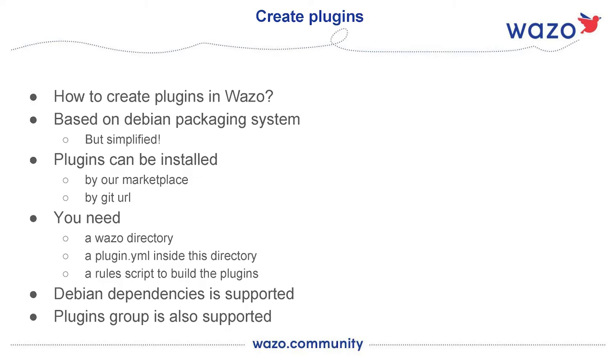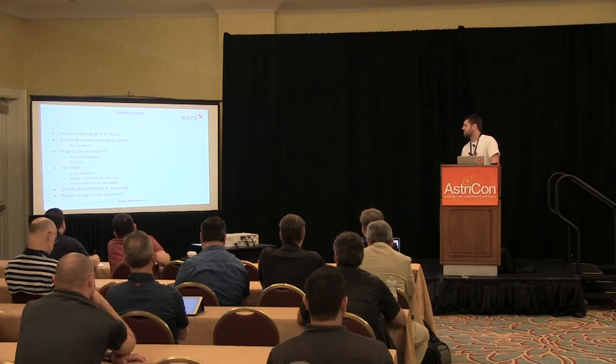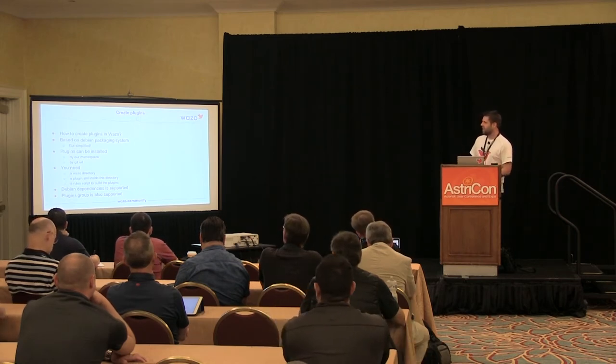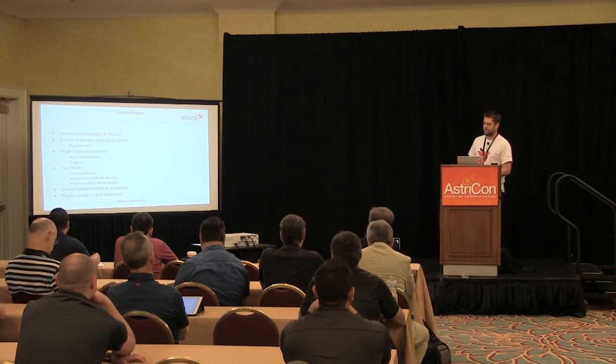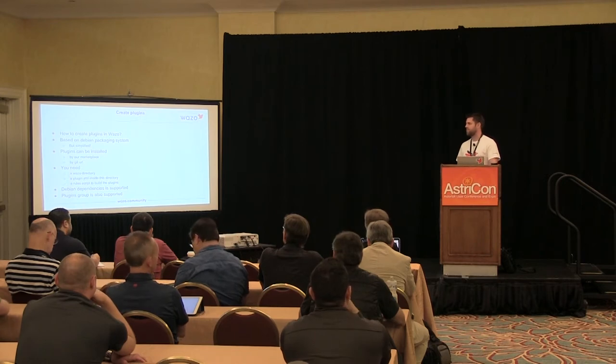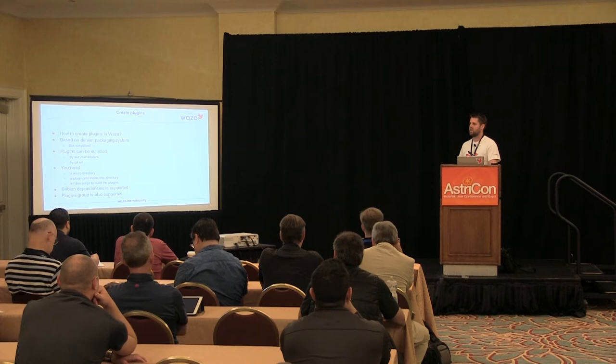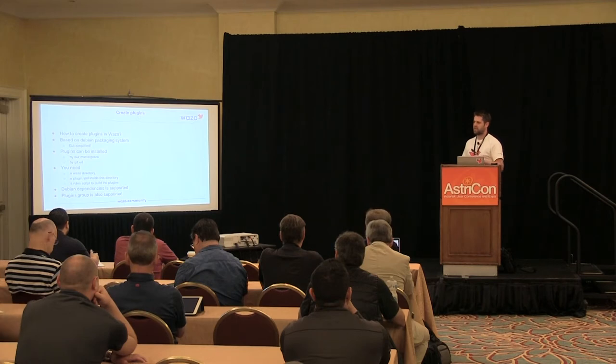What you need for this: you need a WAZO directory in your source code — it's like a Debian directory — with a plugin YAML inside that directory and a rules script to build the plugin. Debian dependencies are supported, so if your plugin needs specific Debian dependencies, you can put them in the plugin YAML. Plugin groups are also supported, so if you create many different plugins and want to install them all with only a meta-plugin, that's possible too.